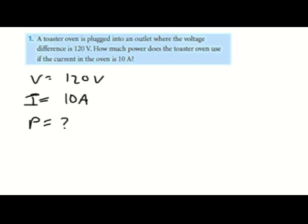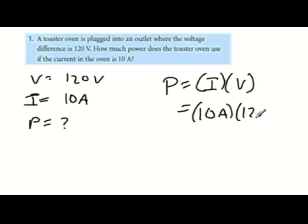So the problem is asking us how much power. We're going to use the equation power equals current times voltage. Plug our values in. The current is 10 amps times 120 volts, which is standard for United States outlets. And we find that the answer is 1200 and it's amps times volts, so that's going to be watts.